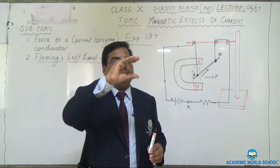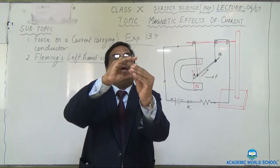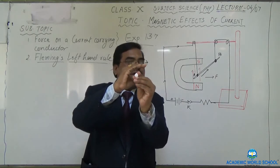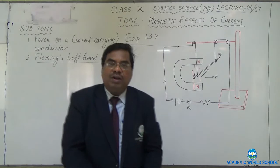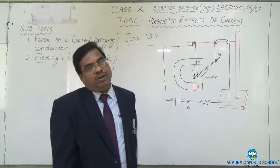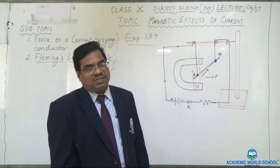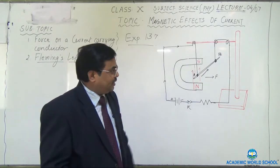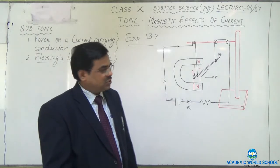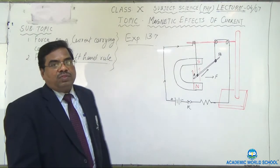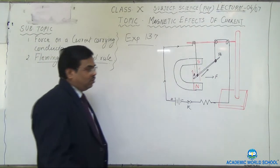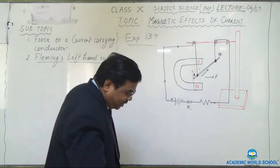The conductor AB which is kept in the horseshoe magnet will feel one force in the direction of the thumb — towards the outside. On reversing the direction of the current, the direction of the force will also change. If you change the direction of current, the direction of force will also change. This is Fleming's left hand rule.